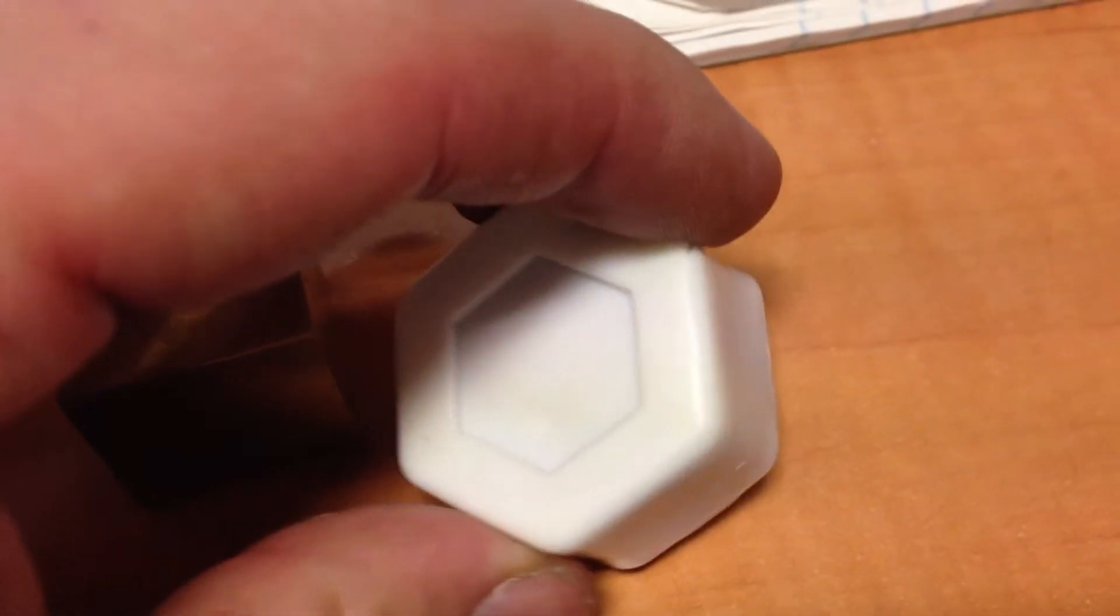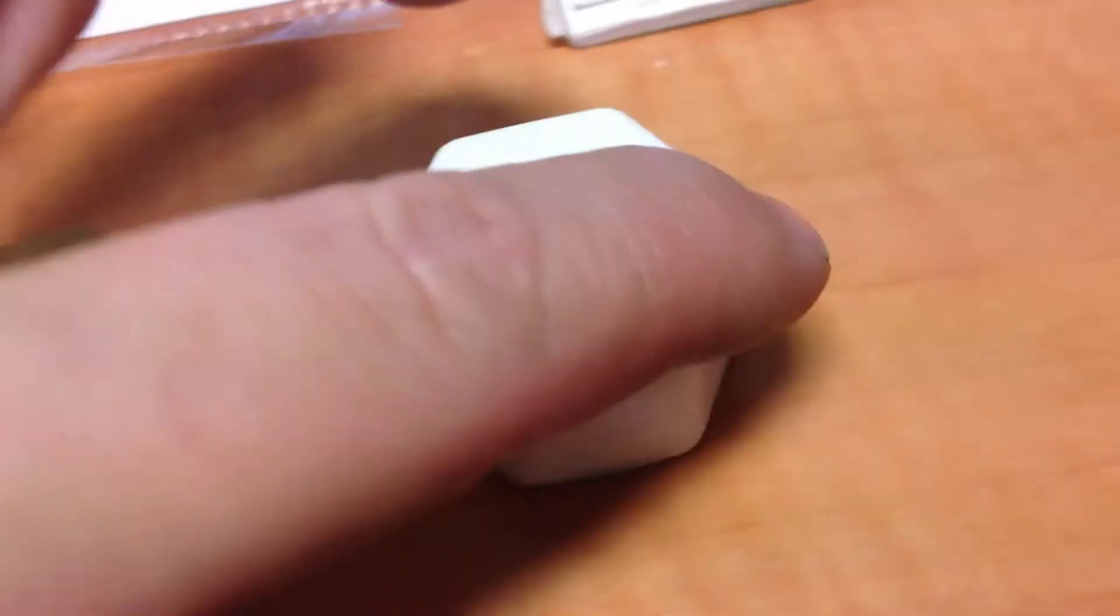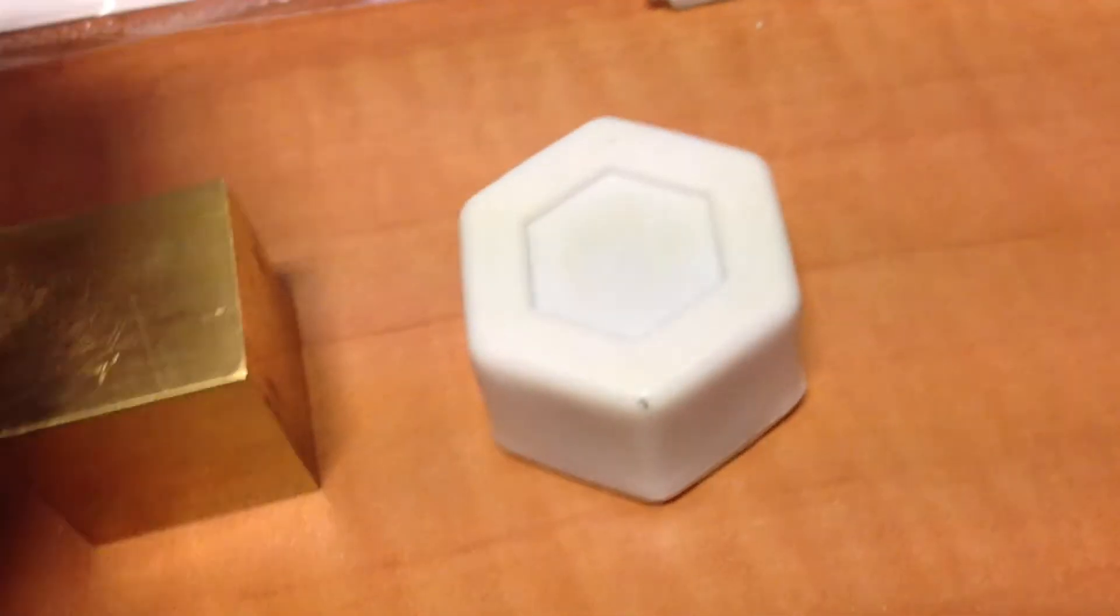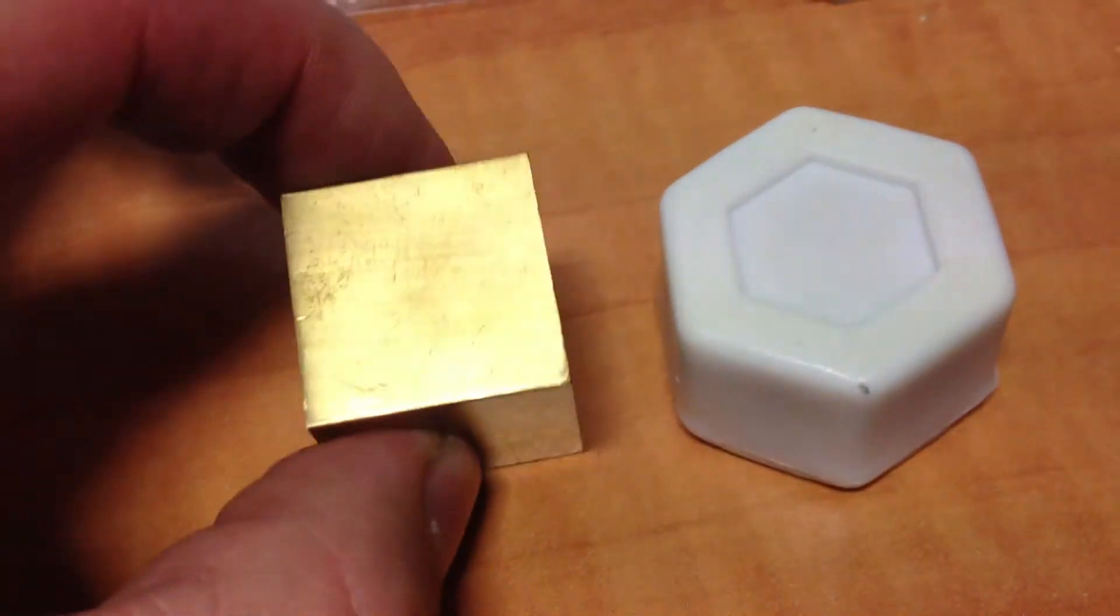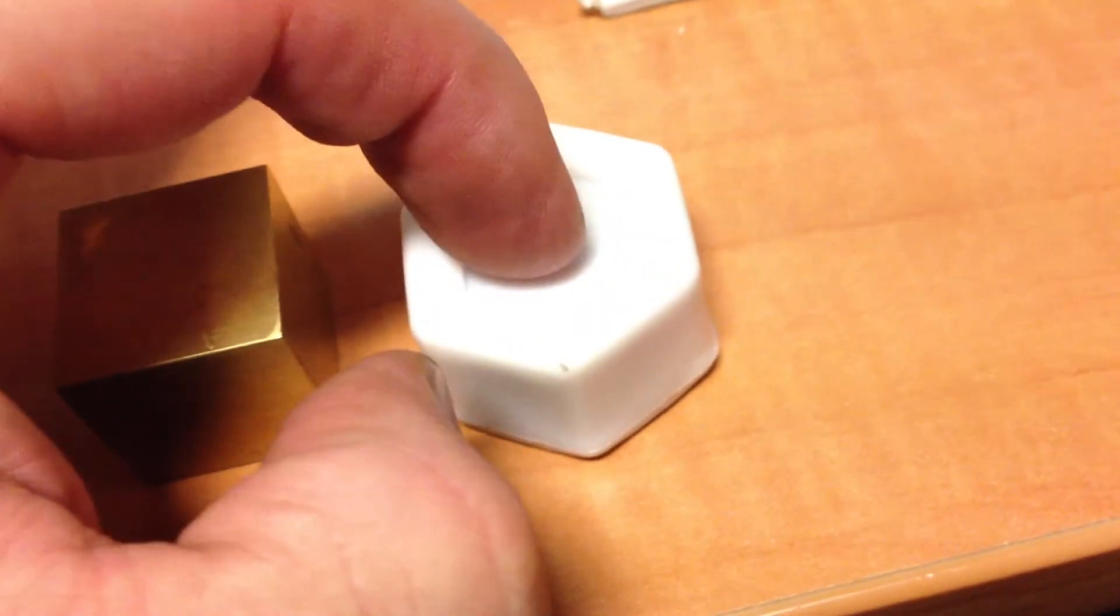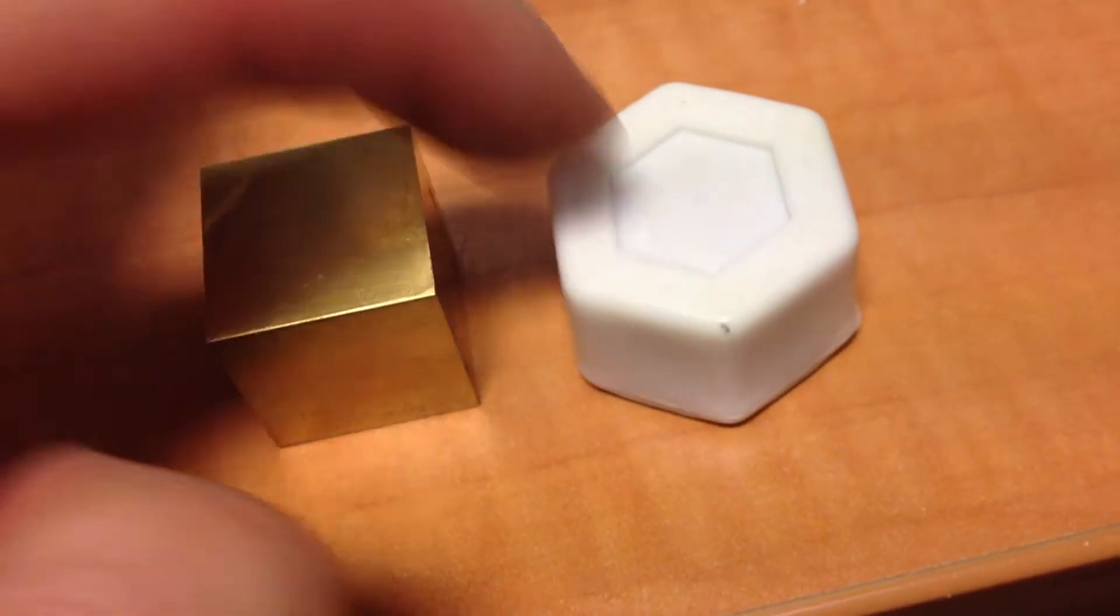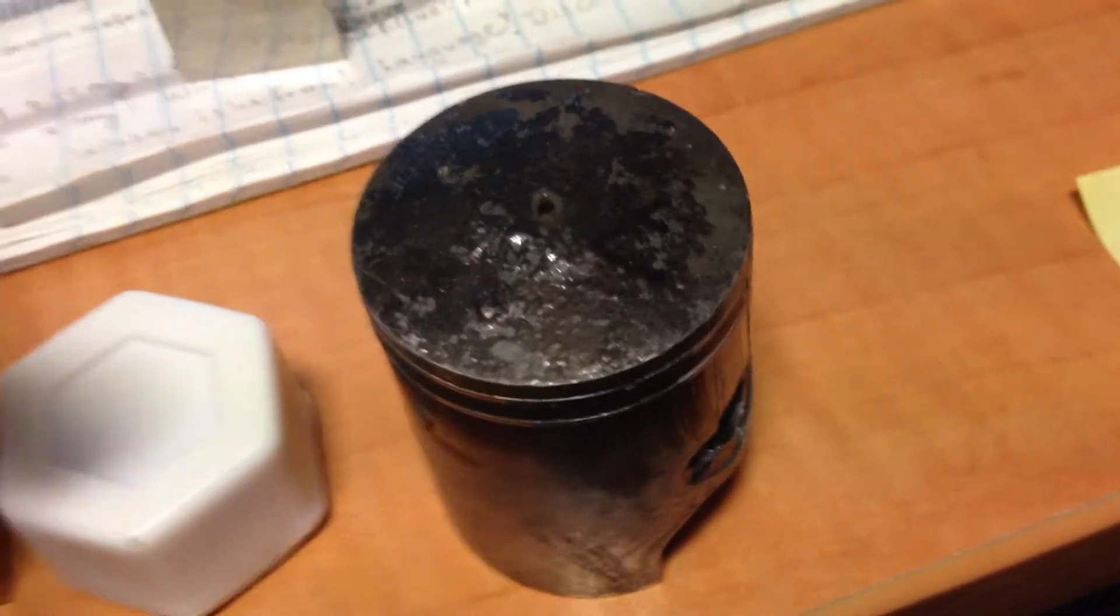But this shape next to it, a hexagonal prism, also has a volume or space inside of exactly one cubic inch. If I were to fill this with water, I could take the water out of it and pour it into this shape. It would be the same: one cubic inch.